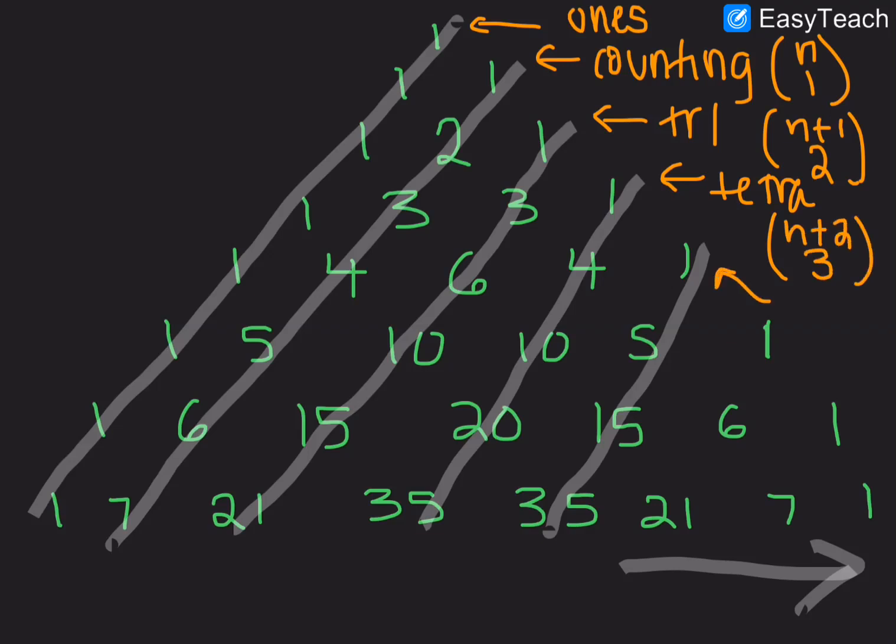You can say that the pentatope are n plus 3, choose 4. And these continue. So, you can write the diagonals in terms of these combinations.